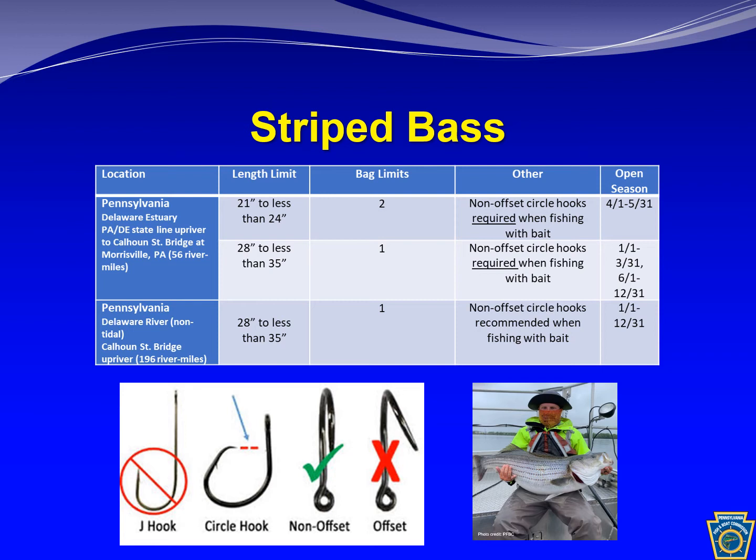Additionally, the slot limit was adjusted to a 21 to 24-inch limit allowable for harvest to improve protection on spawning adults. This slot limit is in effect from April 1st to May 31st. In other times of the year, the slot is open to 28 to 35 inches for allowable harvest. Within the Delaware River, the use of non-offsetting circle hooks is recommended but not required when fishing with bait, and a slot limit of 28 to 35 inches was created for allowable harvest.